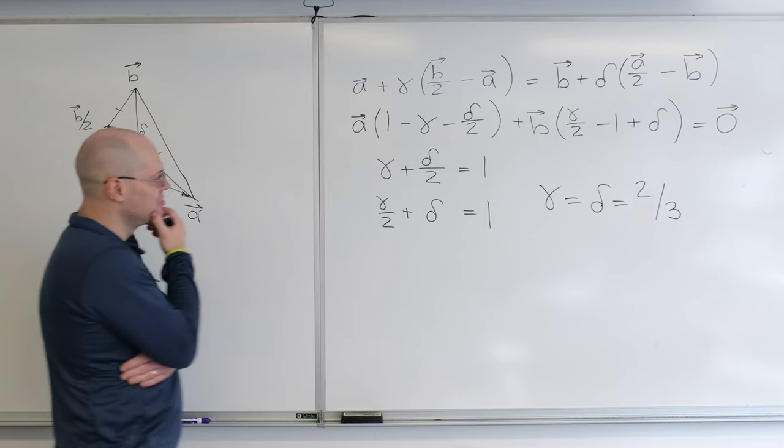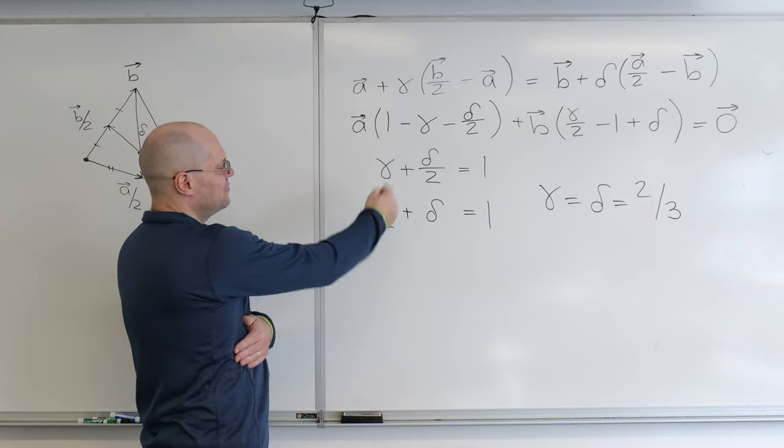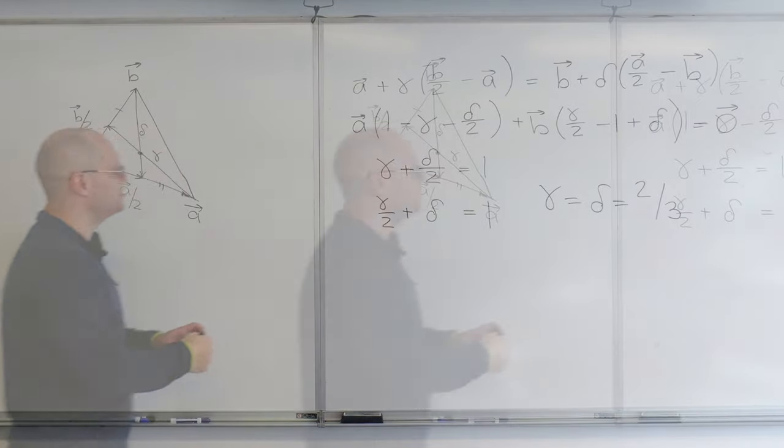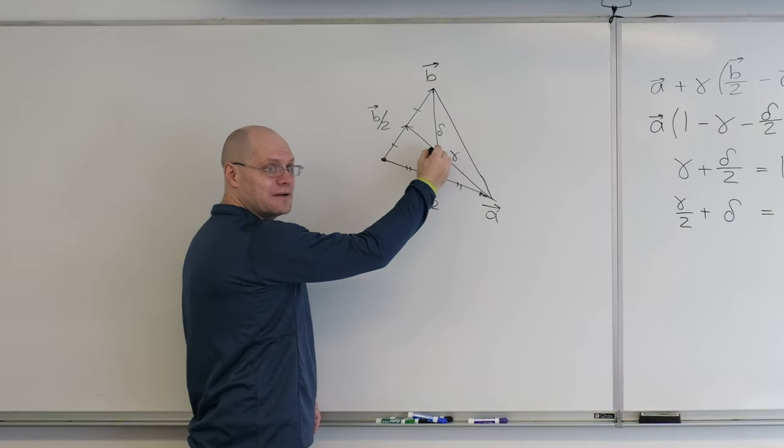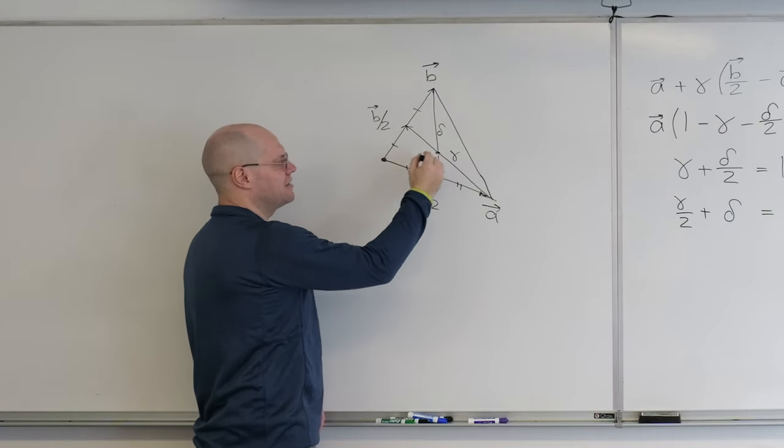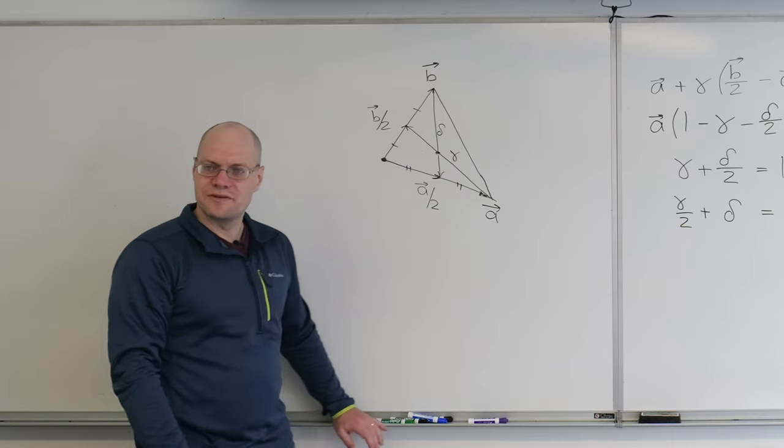So this wasn't actually too terrible in terms of how much work we did, and we got the answer. So this is two-thirds. Therefore this is the remaining part, one-third. So proportion two to one. Q.E.D. I've always wanted to say that.